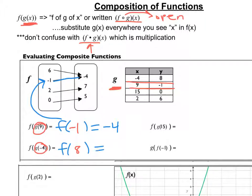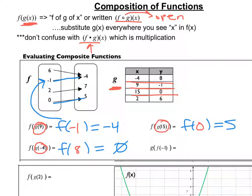So now I look at f of x — what is f of 8? I don't see an 8, so we go with no solution. Looking at the next one, g is still on the inside: g of 15 is 0, so this becomes f of 0, and 0 takes me to 5. The last one switches the order, so I look at f of x first: f of negative 1 goes to negative 4, and then g of negative 4 is 8. You have to look at the inside function first to get to the outside.